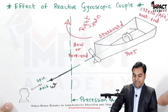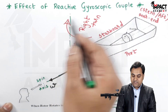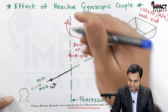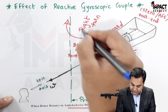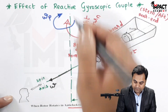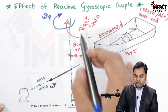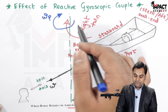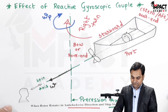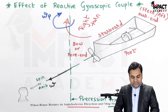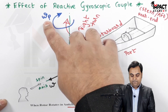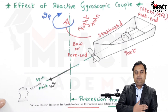Looking from the top, the ship is taking a right turn, so the precessional angular velocity omega_p is acting about the precession axis in a clockwise direction when viewed from the top. Omega is the angular velocity of the rotor, and omega_p is the angular velocity of steering when the ship steers to the right.